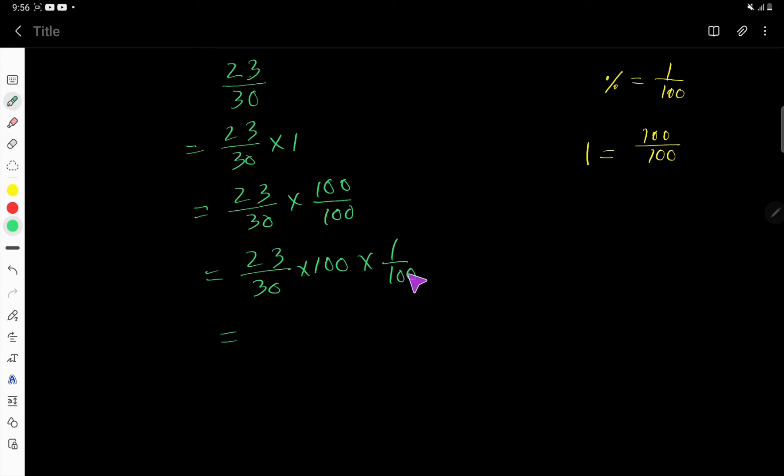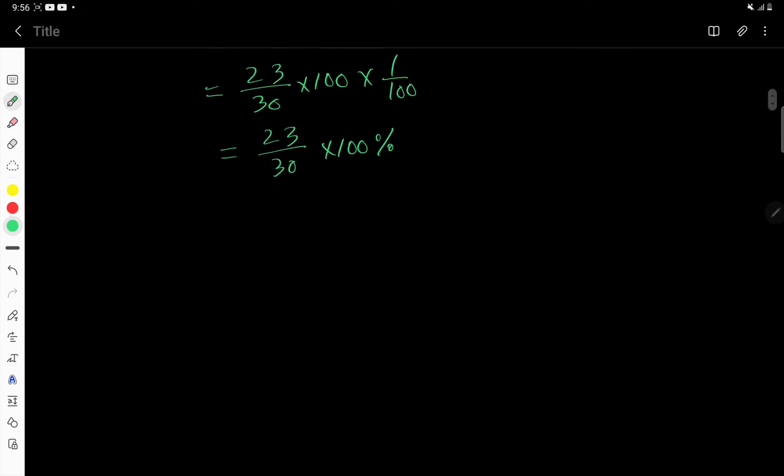Also you can rewrite this. And now 1 over 100 means this percentage. Right. Now you can cancel this 0 to this 0. So you are getting 23 times 10 divided by 3 percent.